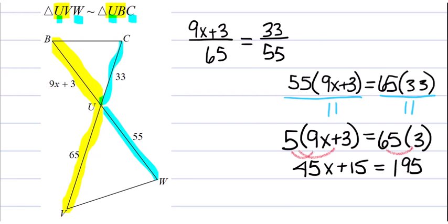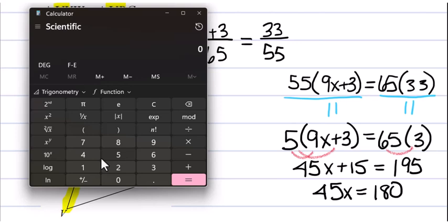So let's subtract 15 from both sides. So 45X equals 180. And all I got to do now is take that 180 and divide by 45, and I get 4.